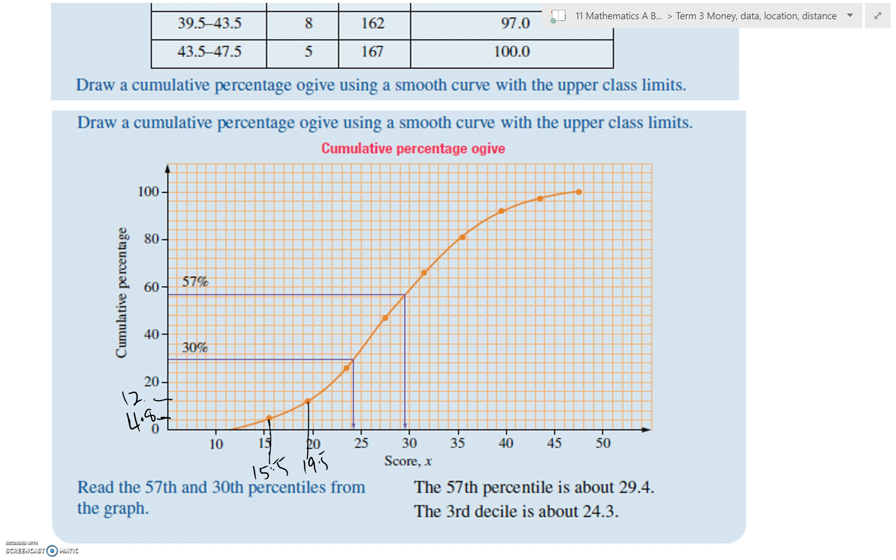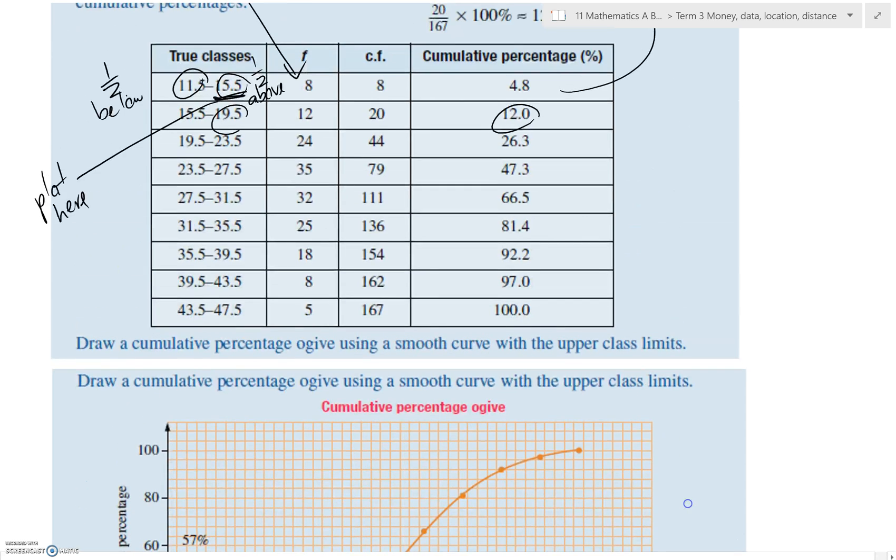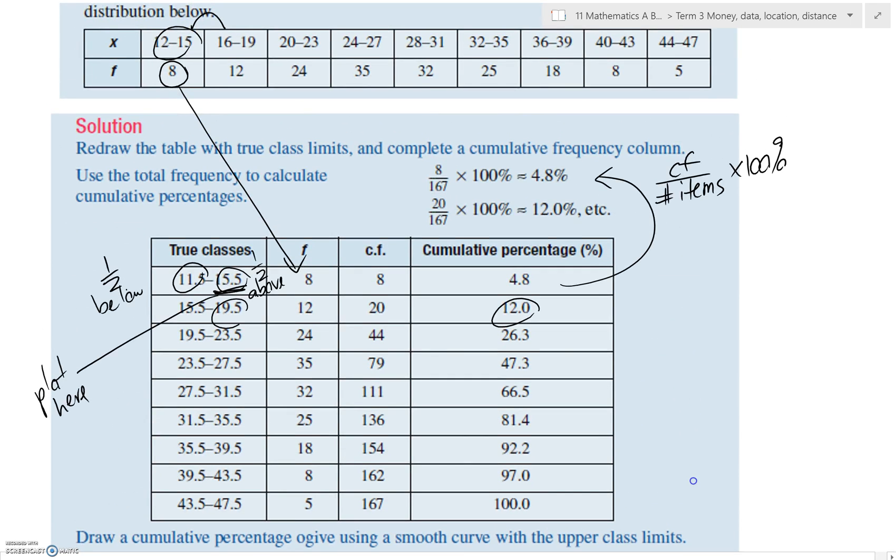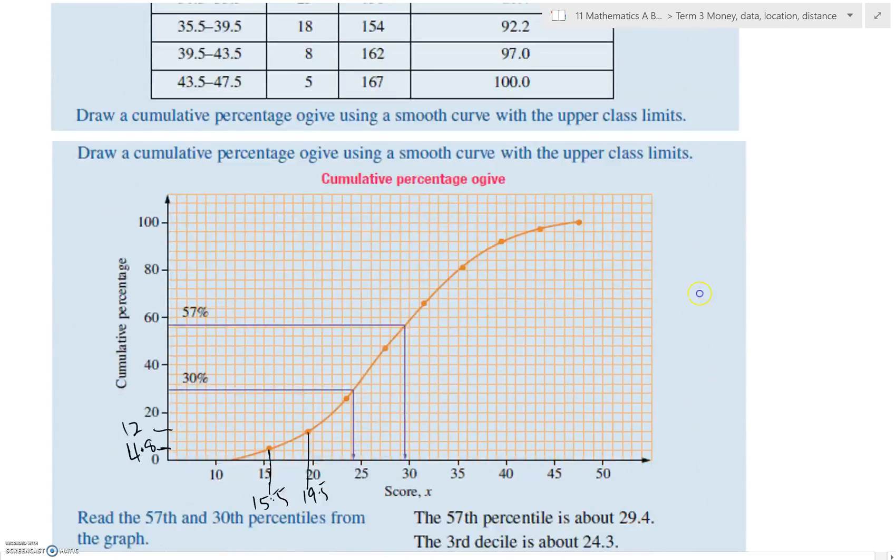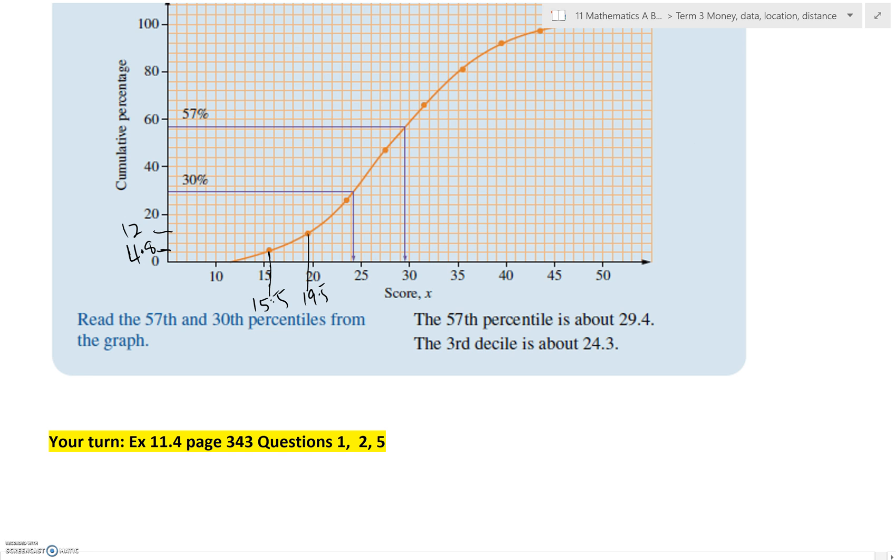Now once you've plotted all of that, all you have to do to find the 57th percentile and the third decile is read it off the graph. So the third decile, because it's in tens, equals the 30th percentile.